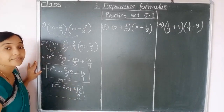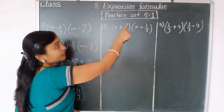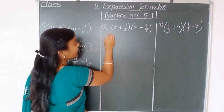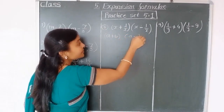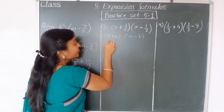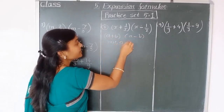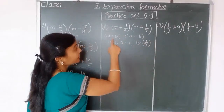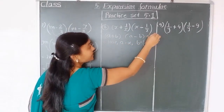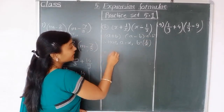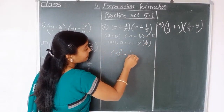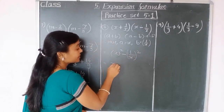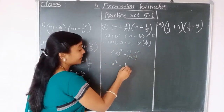Example 8: x plus 1 by x into x minus 1 by x. Here we use the formula a plus b into a minus b equals a squared minus b squared. Here a equals x and b equals 1 by x. So the expansion is x squared minus 1 by x squared, which we write as x squared minus 1 upon x squared. This is our answer — very easy using this formula.